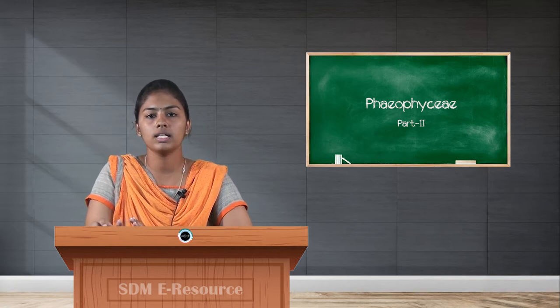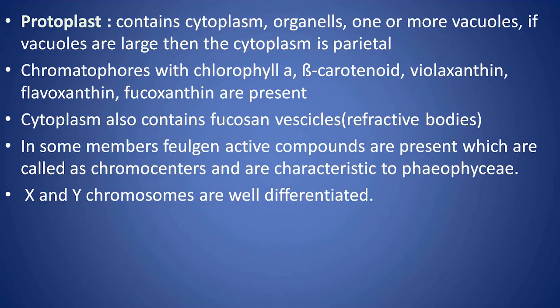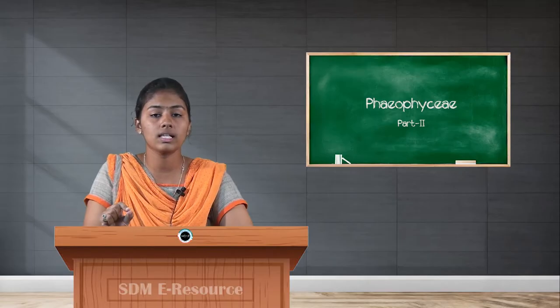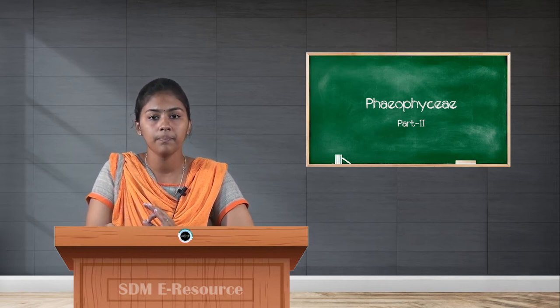The cytoplasm also contains fucosan vesicles, which are called refractive bodies. One of the main characters of Phaeophyceae members is that genetically we can differentiate the X and Y chromosomes — that is, the male and female plant body or thallus can be very easily differentiated.